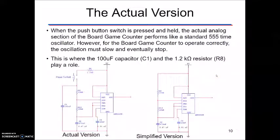So now looking at the actual version when we push the button and it's held, the analog section of the board game counter performs like a standard 555 timer oscillator. However, in order for it to operate correctly the oscillation does eventually have to slow and eventually stop and that's where those capacitors and that resistor come in. So they work on slowing down that signal in a way that essentially slows the roll of the die.